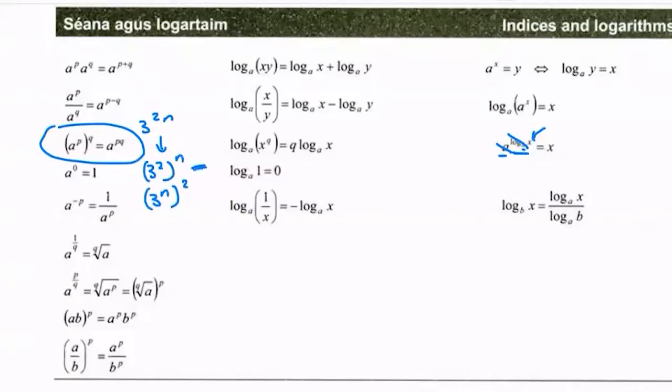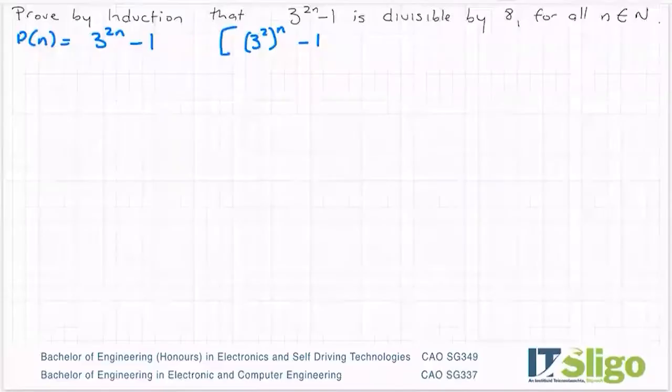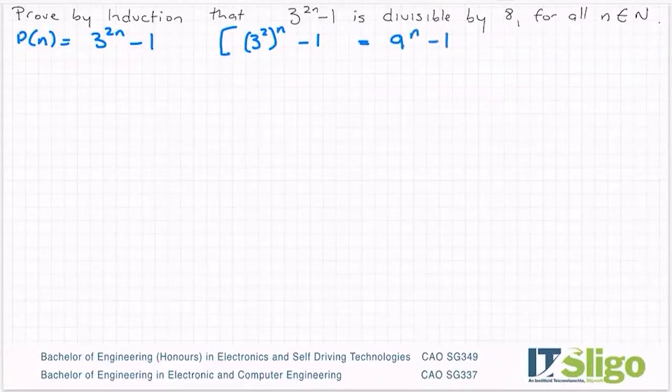This one makes more sense to me because 3² is 9, it's a number. So I could write this as 9^n - 1. It just might make our algebra that bit easier if we write it as 9^n instead of 3^(2n). But it's the same thing, it doesn't really matter which way you go.